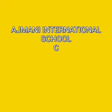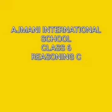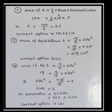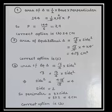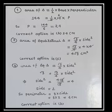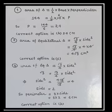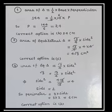Hi students, today I am going to Class 6 Reasoning Chapter 10, Exercise 10.1. Question number 1: the area of a right angle triangle is 144 cm² and its base is given 12 cm. We have to find out the perpendicular of the triangle.